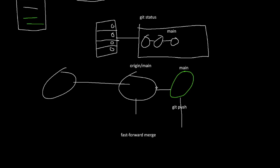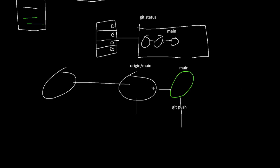Because there's no other things to include — no third commit or anything — it can just take all these and put them on the end. This is a very simple type of merge. It's actually merging these two branches and then updating the version on the remote with the new merged version.